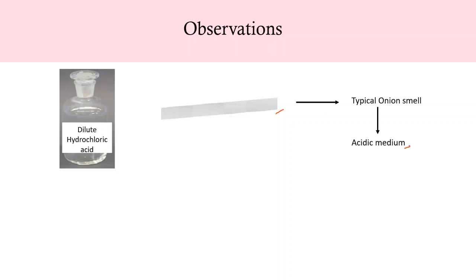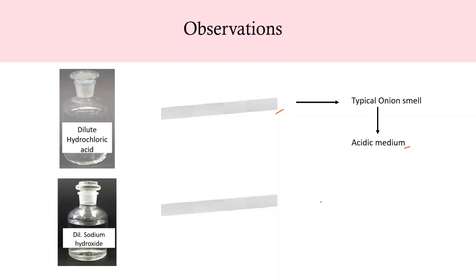When we add a few drops of dilute sodium hydroxide on another cloth strip, we observe the smell of the strip changes — that is, the onion smell is lost from the cloth strip. By this we conclude that the smell of onion changes in basic medium.